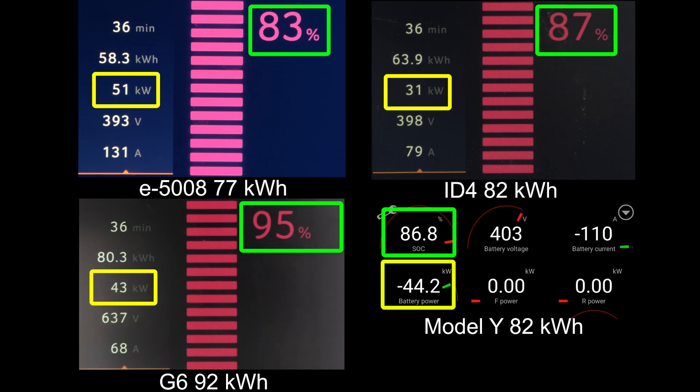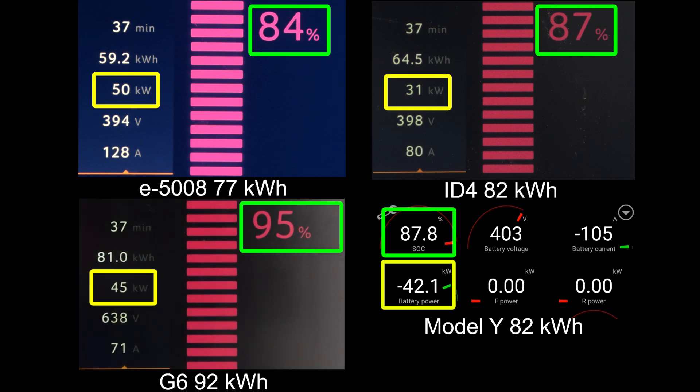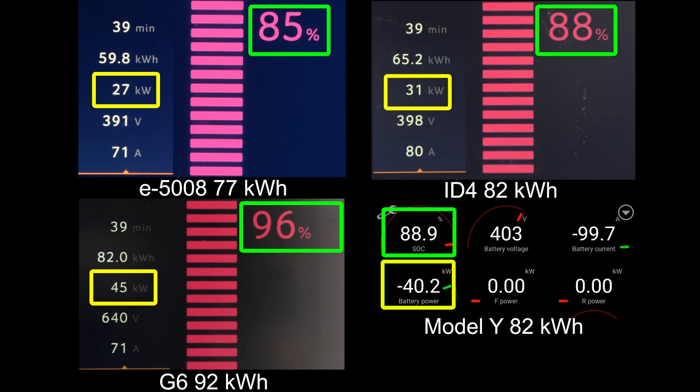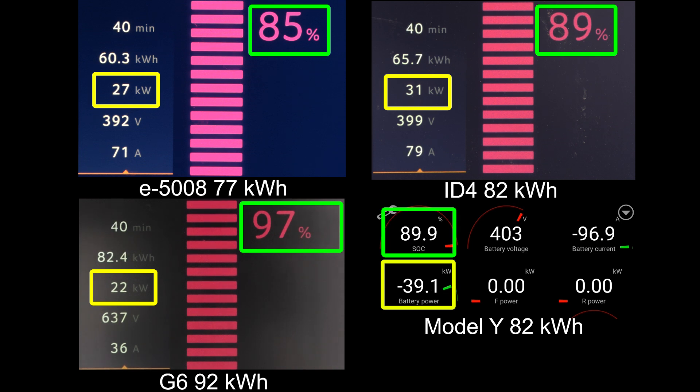But Model Y is also going kind of slow now. Actually, it's charging a little bit slower than the Peugeot. We'll see now once we look at the charging curve afterwards. And the second place will go to the ID4, about to hit 90 percent by the time G6 hits 100 percent. Actually, Model Y is also about to hit 90 percent. Wait, which car is going to win first? There, Model Y hit 90 percent right before ID4. Wow. Okay, a small win for Tesla there. And then ID4.